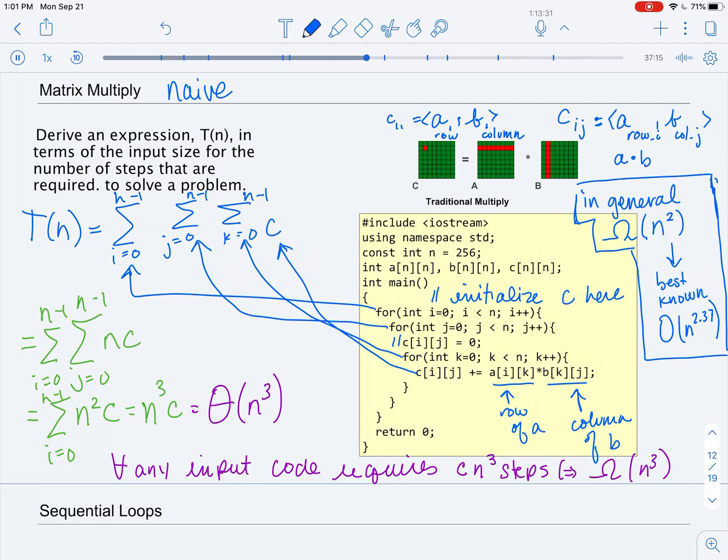But for what we've just shown for the naive matrix multiplication algorithm, that is theta of n cubed, especially as we had just shown it.